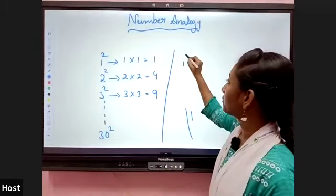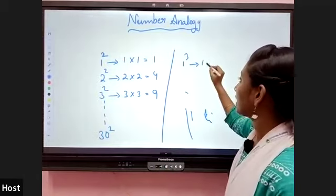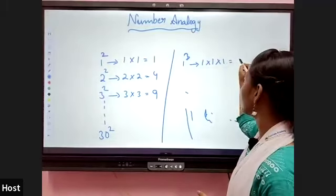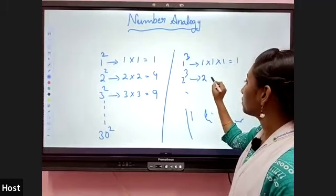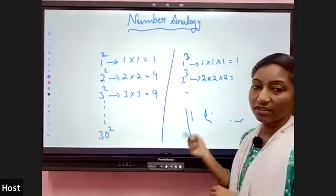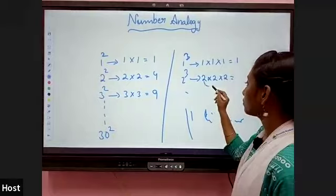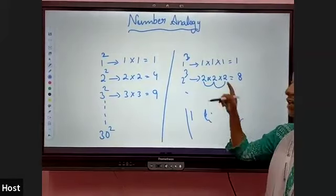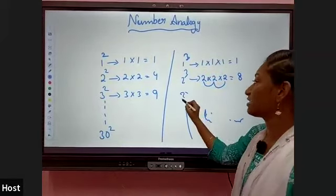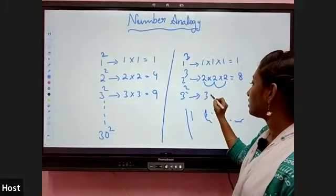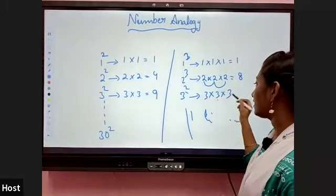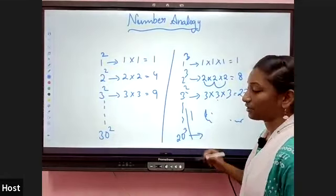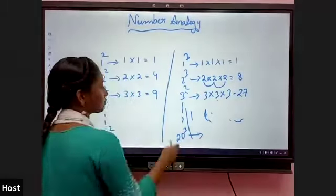Next, coming to the cubes. 1 cube means the power is 3, so 1 is multiplied 3 times: 1×1×1=1. 2 cube means 2×2×2. Many students will write 6, but 2×2=4, and 4×2=8. 3 cube means 3×3×3: 3×3=9, and 9×3=27. Up to 20 cubes you should learn.